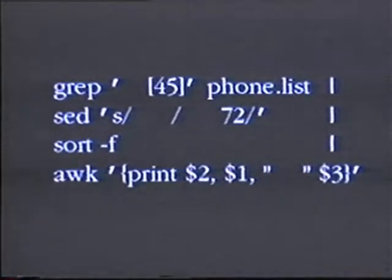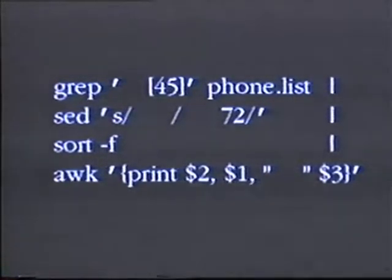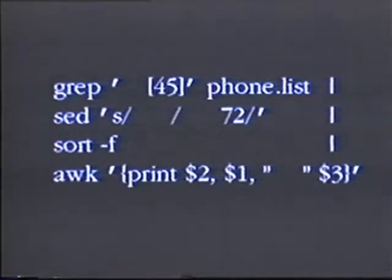Suppose you want to put the first name in front of the last name, so you want to format the output of the sort command. That's simple — just tack an awk command on the end of the line.